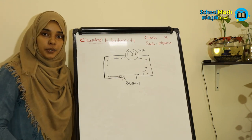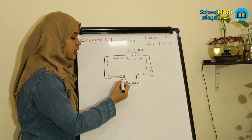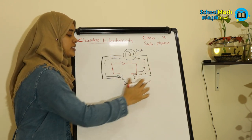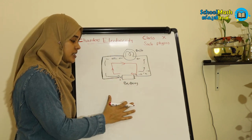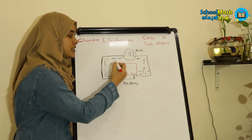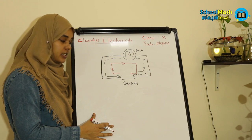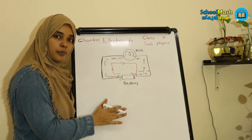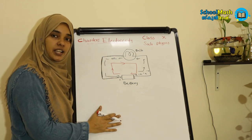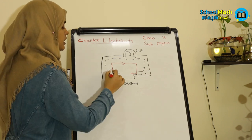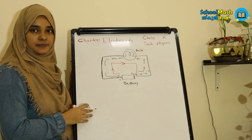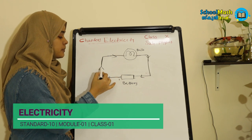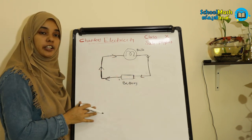Now let's consider the current direction in a circuit. The conventional current direction is marked from the positive terminal to the negative terminal. In every circuit, we mark the current direction this way. The current flows from positive terminal through the external circuit to the negative terminal.